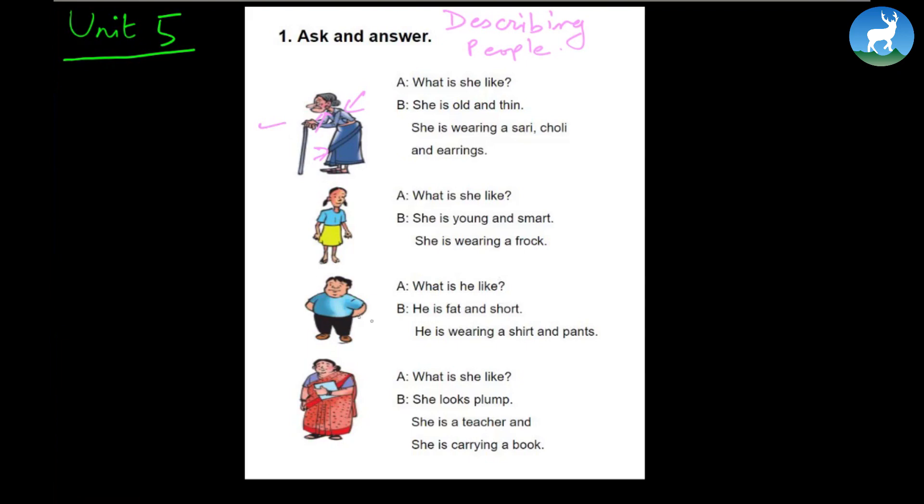What is he like? He is fat and short. He is wearing a shirt and pant. What is she like? She looks plump. She is a teacher and she is carrying a book. So this is a very simple way of describing people as taught here in this particular page.